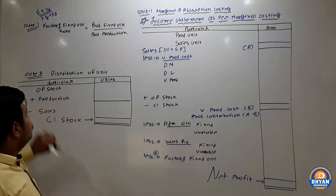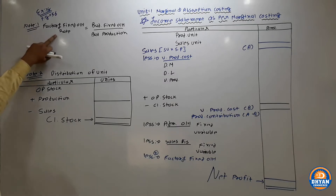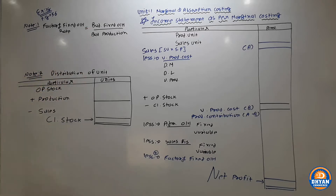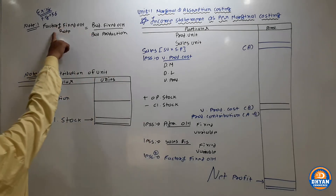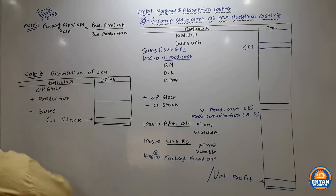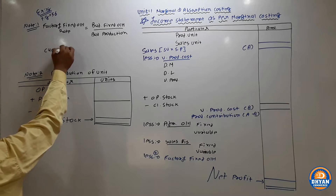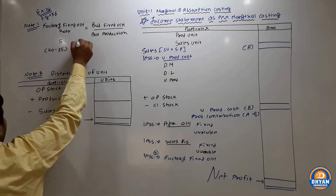We are asked to prepare the profit statement as per marginal and absorption costing. We will always start with two notes. Note Number 1: Factory Fixed Overhead Rate = Budgeted Fixed Overhead ÷ Budgeted Production. The difference between absorption and marginal production cost per unit — that is Rs. 5 — is your factory fixed overhead rate.